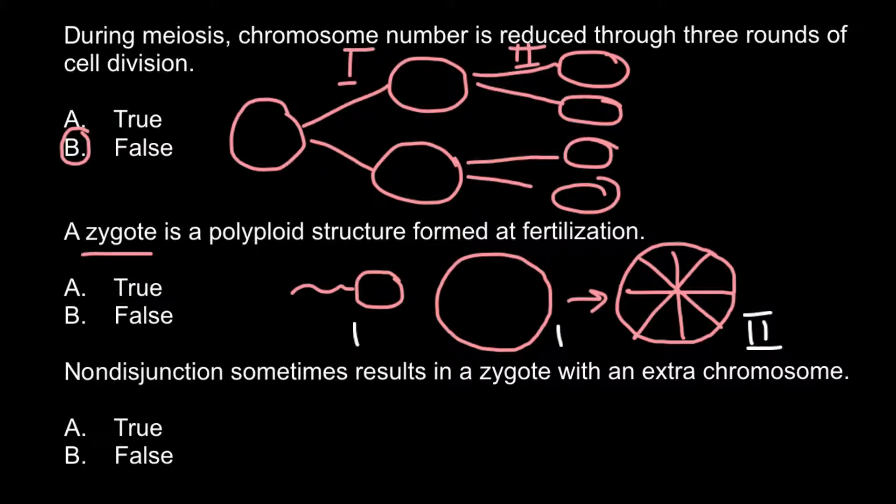The last statement: Nondisjunction sometimes results in a zygote with an extra chromosome. Is it true or false? This is true, and one example would be trisomy 21.